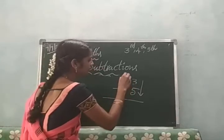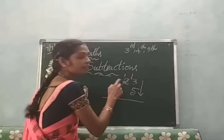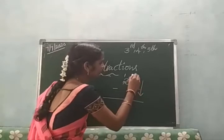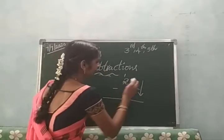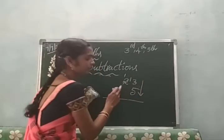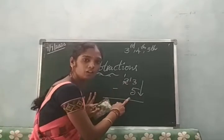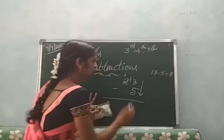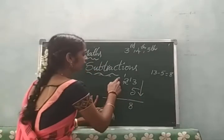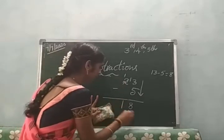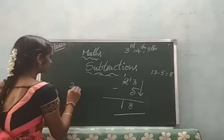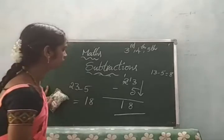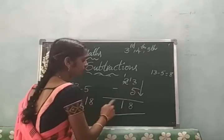So we will borrow from the tens place. I borrow 1 ten, which means the 3 becomes 13 and the 2 becomes 1. So now we have 13 in the ones place. 13 minus 5 — how much is 13 minus 5? It is equal to 8. After that, the remaining 1 is in the tens place. So 23 minus 5 is equal to 18.